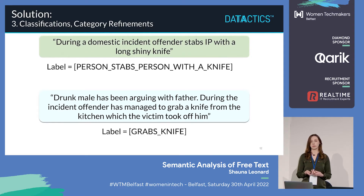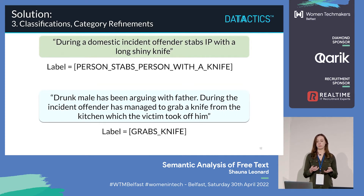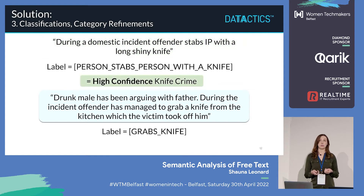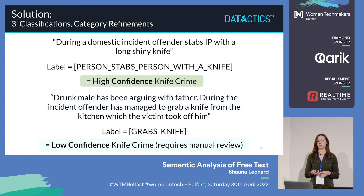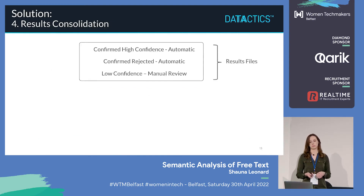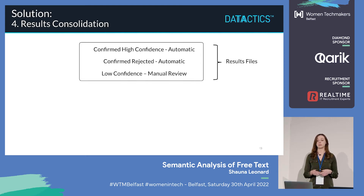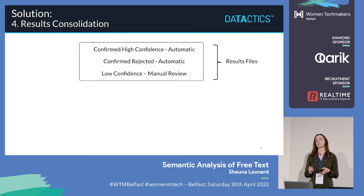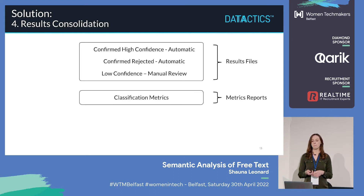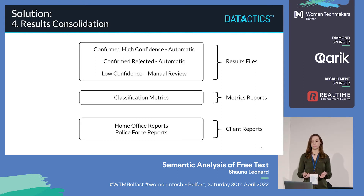Step three is classifying these labels. The first label, 'person stabs person with a knife', is pretty much a clear-cut knife crime, so we give that a high confidence. The second one, 'grabs knife', means we're not entirely clear what he or she did with the knife, so that gets a low confidence, which will require manual review from a human. Step four of the methodology is results consolidation: the high confidence and rejected records don't need to be reviewed, the low confidence ones are ambiguous and will need someone to check them. We've got a metrics report and various other reports for stakeholders.